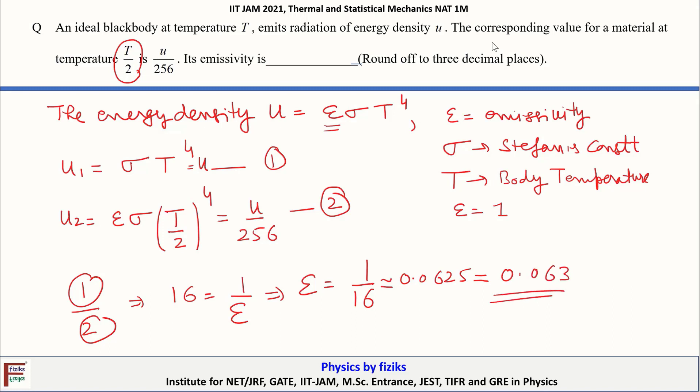Therefore the emissivity of the body is 1/16, or to three decimal places, 0.063.